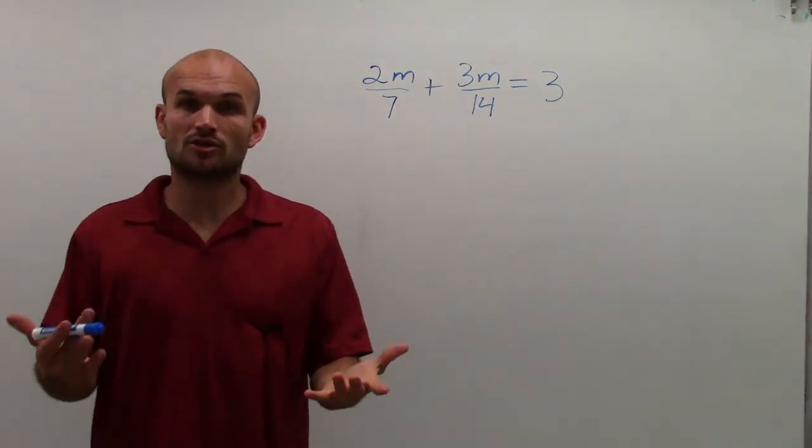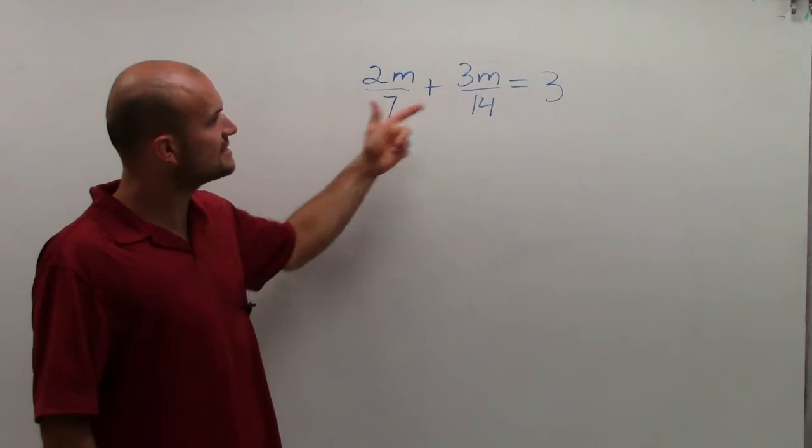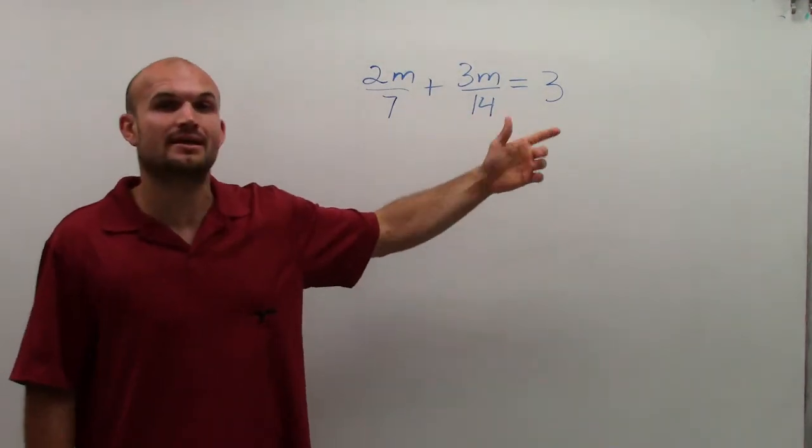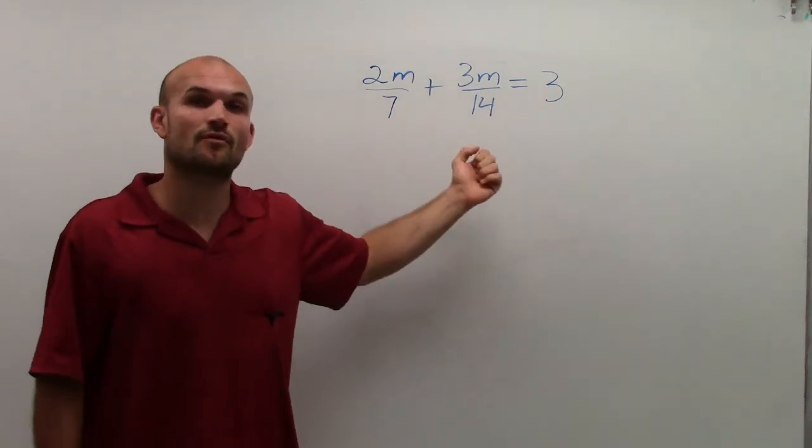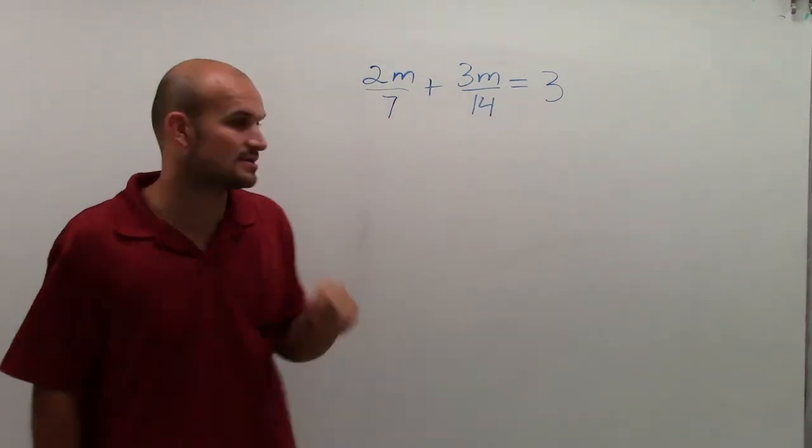Well, that's what we call the least common multiple. So the least common multiple of 7 and 14 is 14, meaning 7 goes into 14 twice, and 14 goes into 14 once.